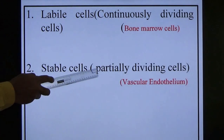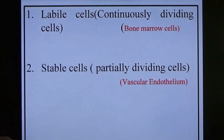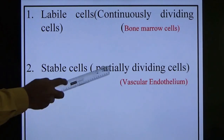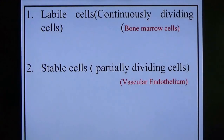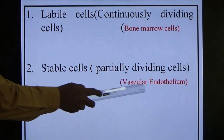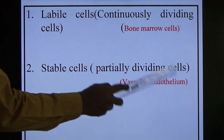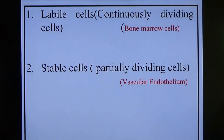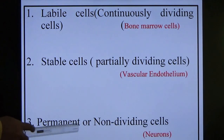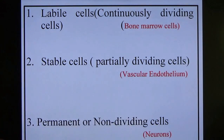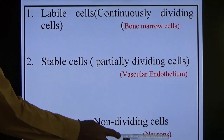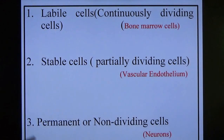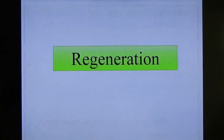Second type is stable cells — partially dividing cells, meaning they divide when the situation requires it. Example is vascular endothelium: when blood vessels are injured, vascular endothelium divides when required. Third type is permanent cells, or non-dividing cells — example is skeletal muscles. We are reading these three types — labile, stable, and permanent cells — for a reason.